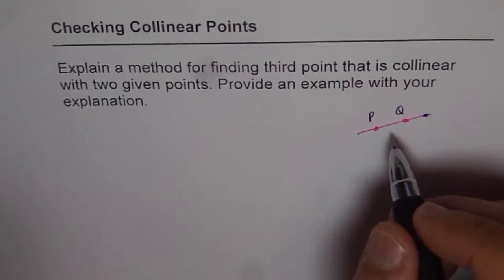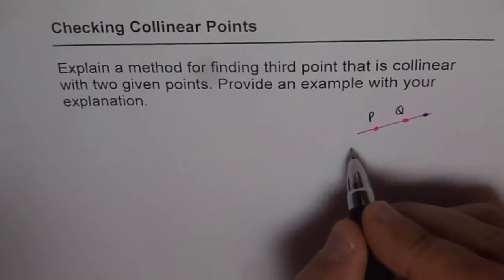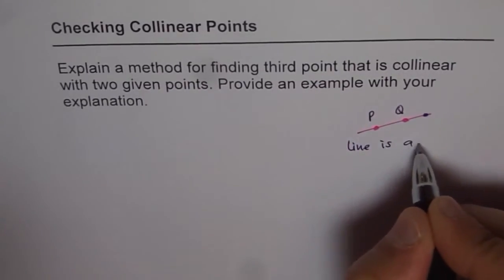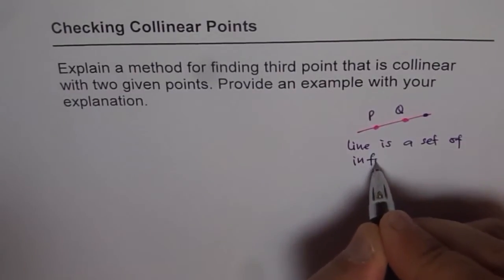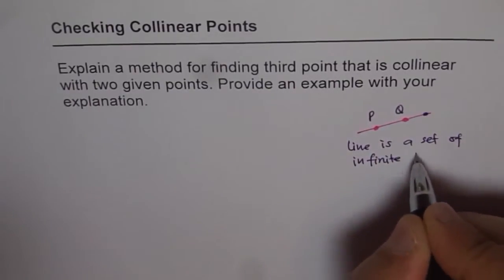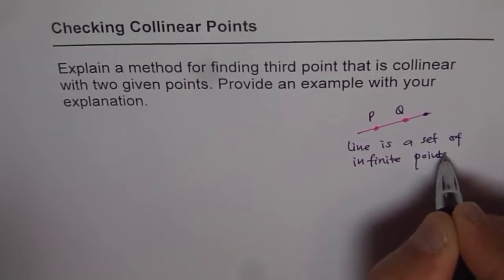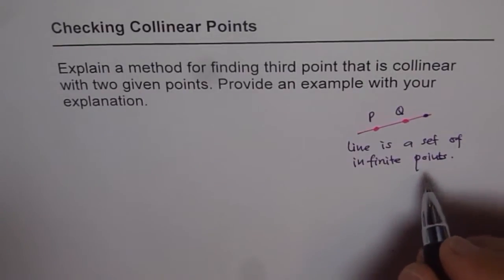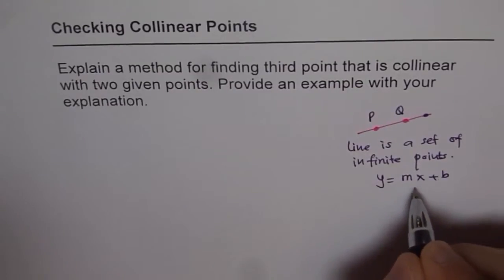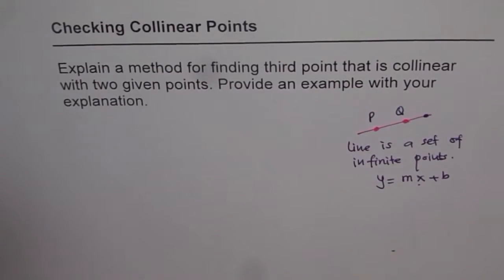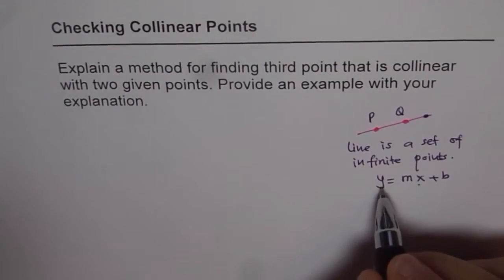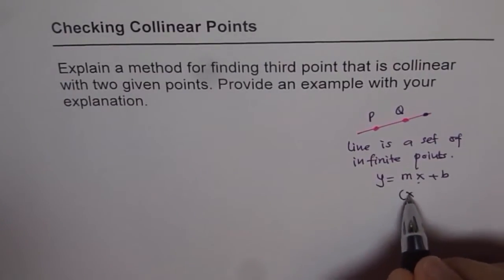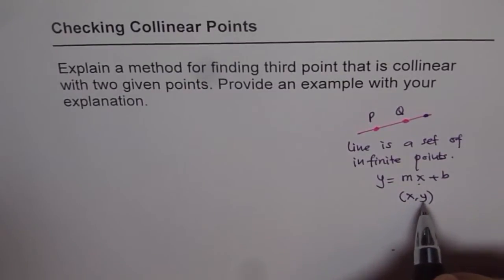Remember, line is a set of infinite points. So there are many points on the line and you can always find those points by using your equation of line. When I say Y equals MX plus B, then X can have any real number as the value and for every X value, there will be a Y value. So it forms a coordinate which is X, Y. Those are the points on the line.